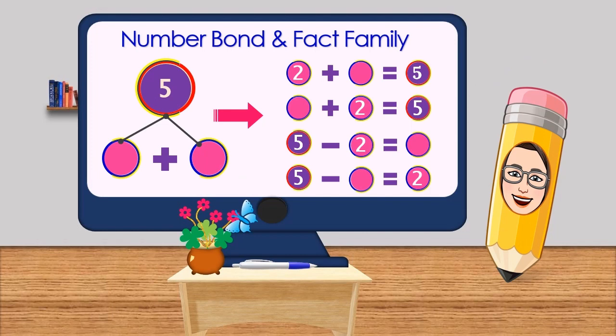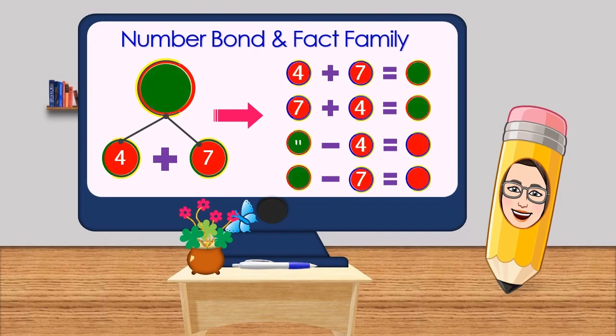Then 7 minus 5 is equal to 2. Perfect. What about this? What do you think are the numbers that bond to 5? 2 and 3, that's right. Then its corresponding fact family are: 2 plus 3 is equal to 5, and 3 plus 2 is equal to 5. In reverse, 5 minus 2 is equal to 3, then 5 minus 3 is equal to 2.